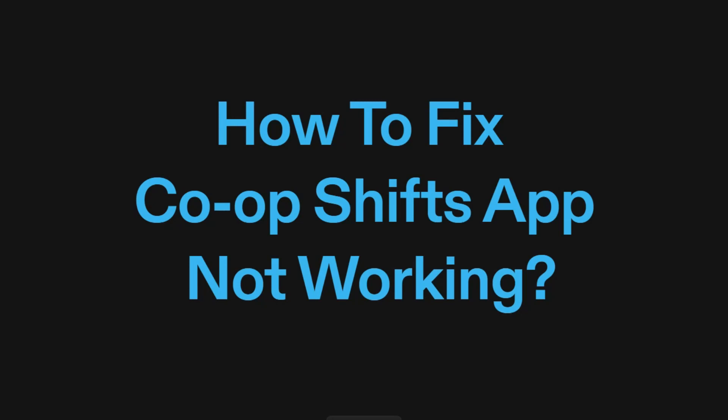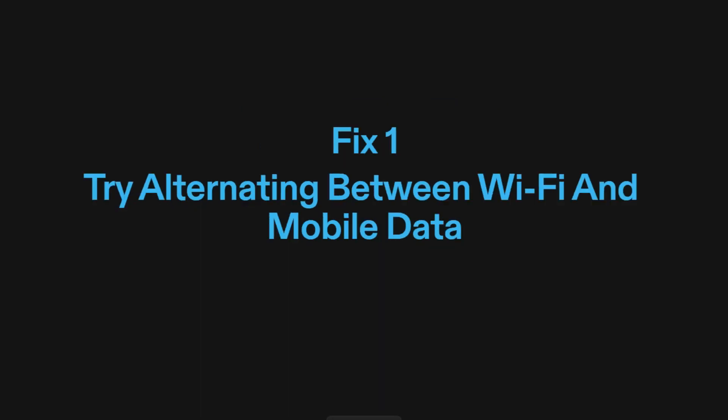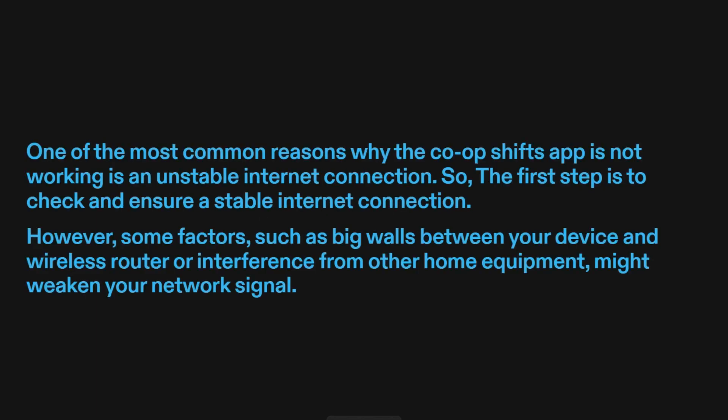How to fix Co-OpShift's app not working? Fix one: try alternating between Wi-Fi and mobile data. One of the most common reasons why the Co-OpShift's app is not working is an unstable internet connection. So the first step is to check and ensure a stable internet connection.